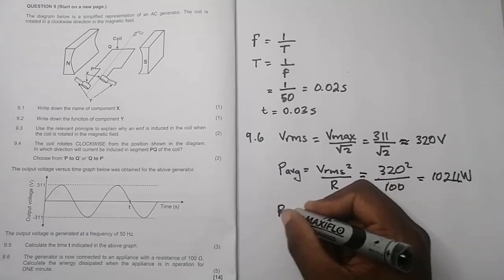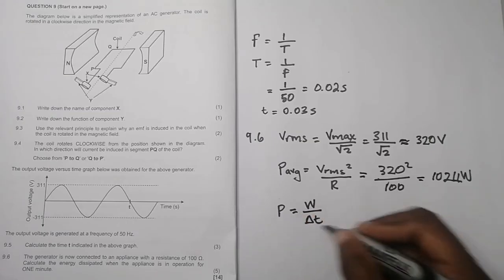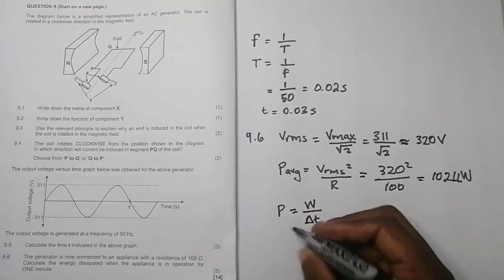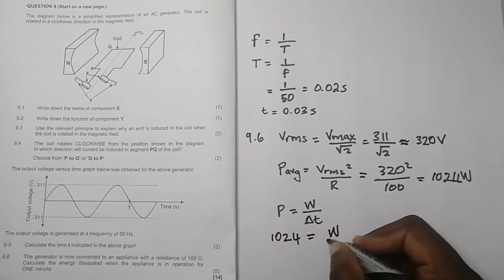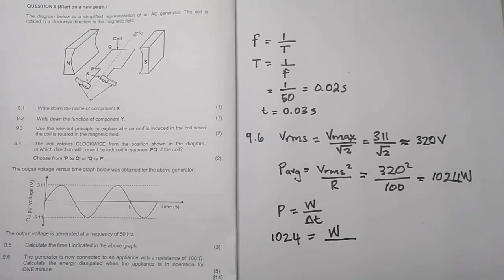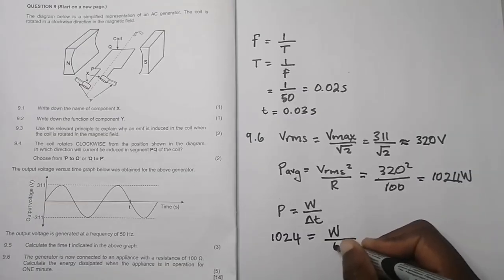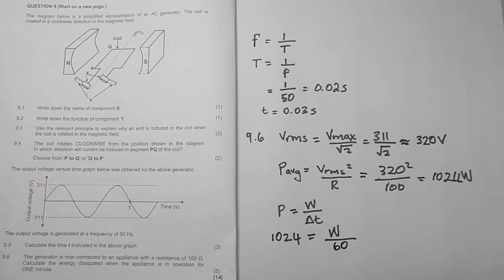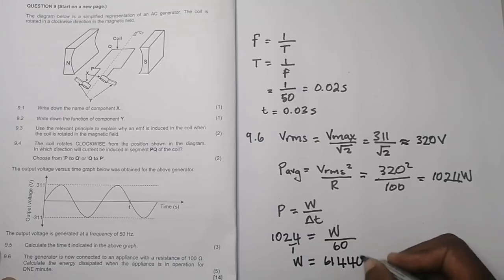So how do we relate energy and power? Remember power is energy dissipated divided by time. Power is the rate at which work is done. So we've got the power 1024, we're looking for the energy, and they given us the time. They said in one minute, but remember that when we use energy it must always be in seconds, so that means it's going to be 60 seconds. So we can multiply that, we can cross multiply by 60, and we get a value, an energy value of 61,440 joules of energy. And that is essentially our final answer.